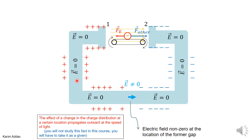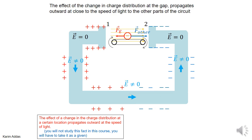This effect will not be felt by the rest of the circuit instantaneously. It takes time. When you have a change in charge distribution, the effect doesn't happen everywhere simultaneously — there has to be some delay. It's an extremely small amount of time, but the effect does not propagate instantaneously.